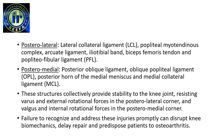The posterior medial corner is made up of the posterior oblique ligament, oblique popliteal ligament, posterior horn of the medial meniscus, and medial collateral ligament. These structures collectively provide stability to the knee joint, resisting varus and external rotational forces in the posterior lateral corner, and valgus and internal rotation forces in the posterior medial corner. Failure to recognize and address these injuries promptly can disrupt knee biomechanics, delay repair, and predispose patients to osteoarthritis.